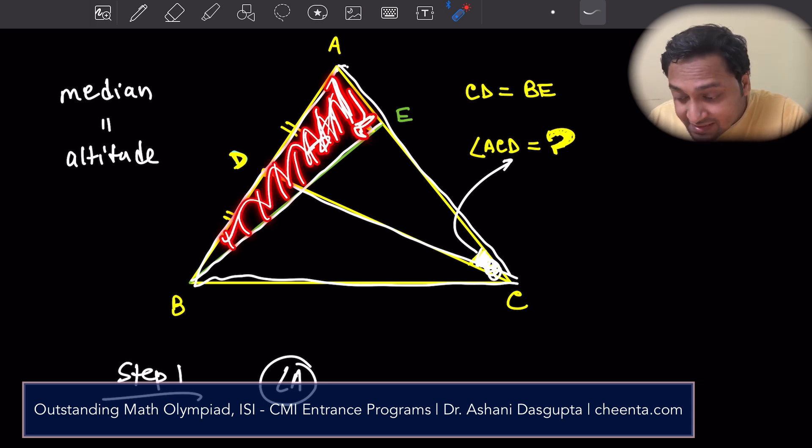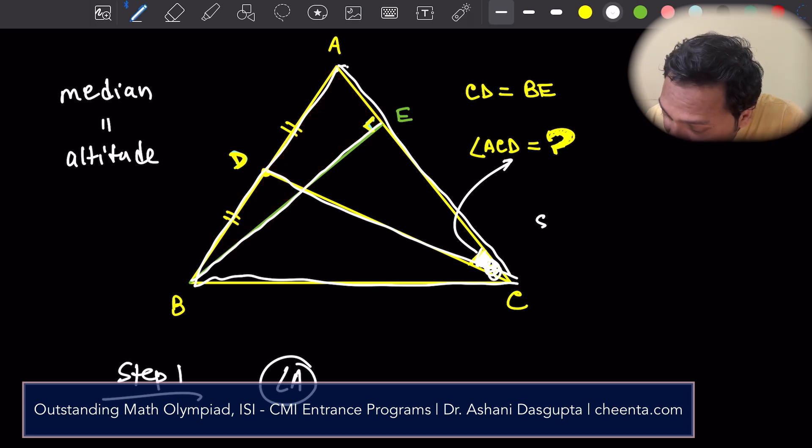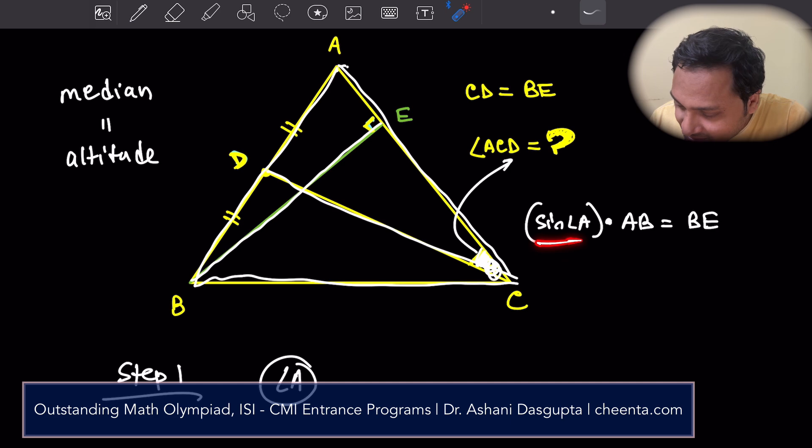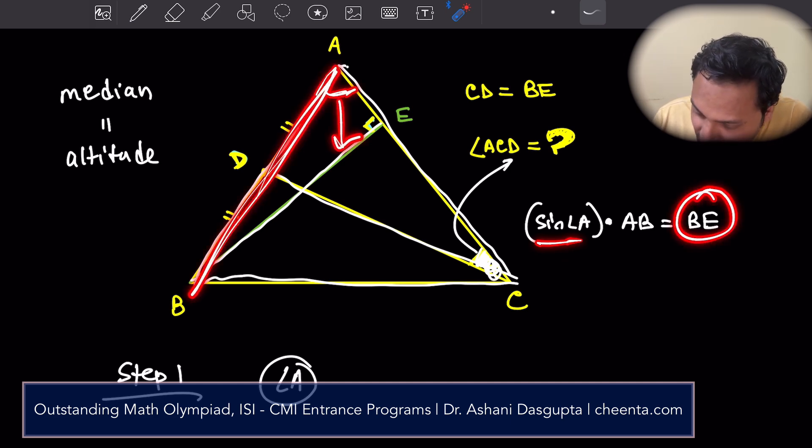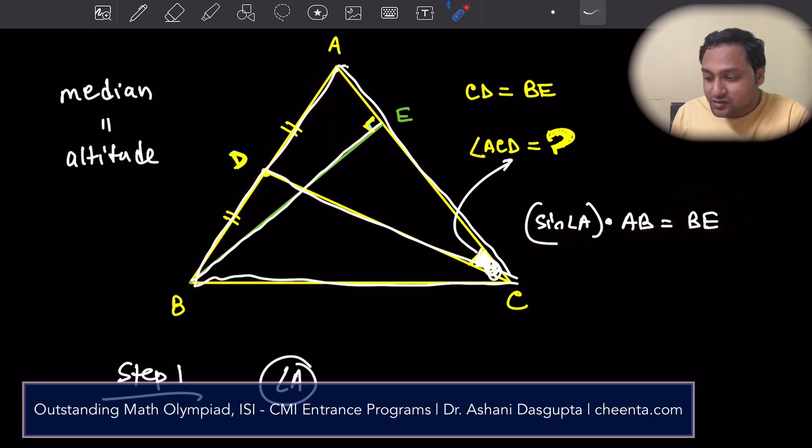So, what we can say is, sine of angle A times AB is equal to BE. Because, after all, sine of angle A is BE divided by the hypotenuse, which is AB. So, sine of angle A equals BE divided by AB. Or you can take the AB to the other side and you have this.